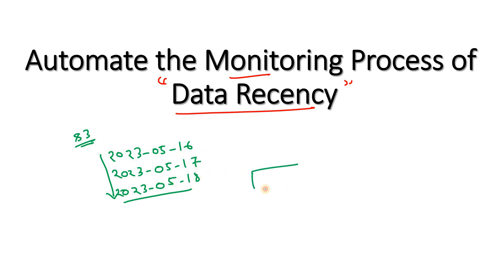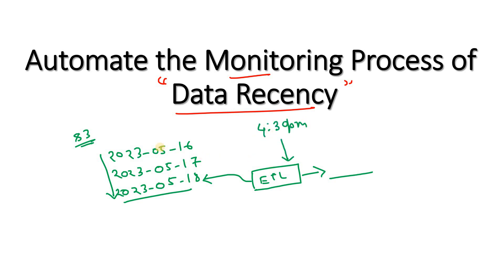Now suppose we have a downstream ETL job — maybe scheduled using Airflow — which is dependent on the latest partition data. It will read data from the latest partition, apply some operation, and generate results. This job is scheduled at 4:30 PM, and we already discussed with the source team who are writing data into these partitions. They agreed to bring the data into the latest partition by 4 PM. We kept a 30-minute cushion so that if something happens, the source team still has time to write the data.